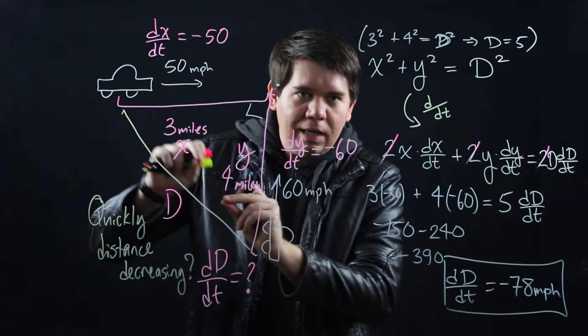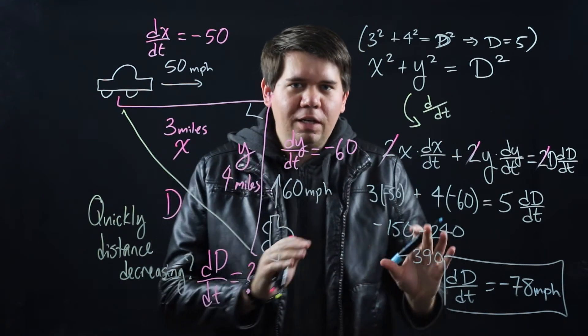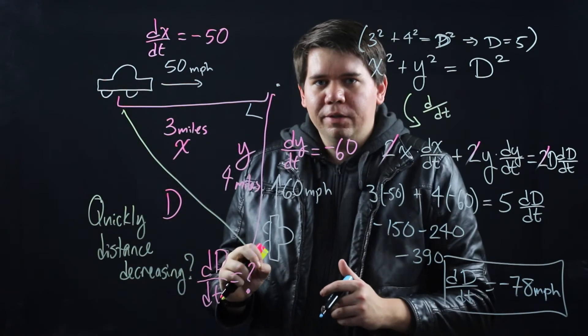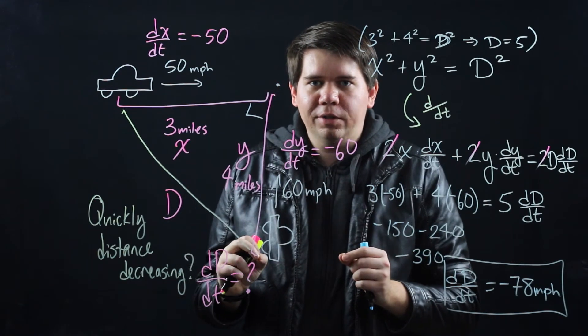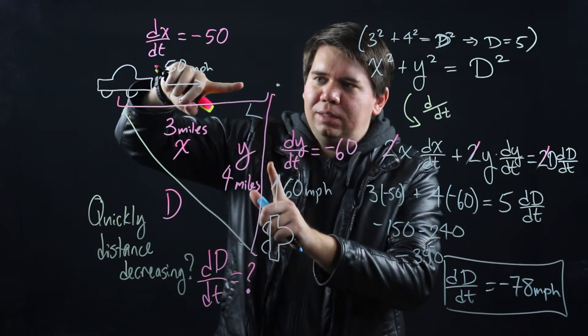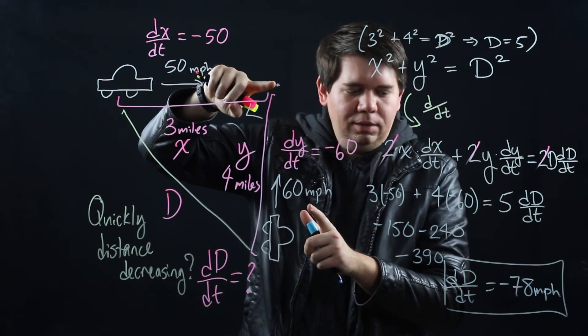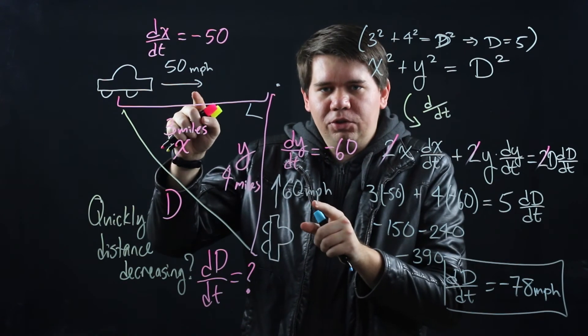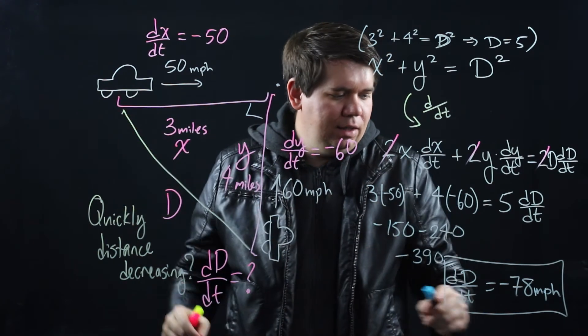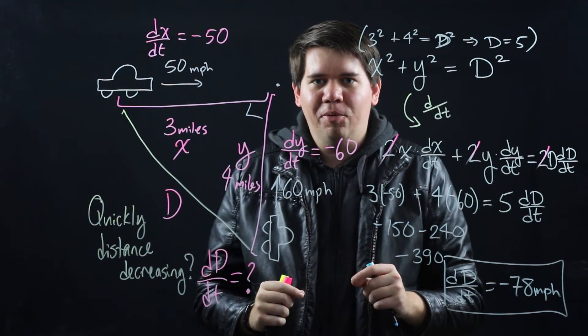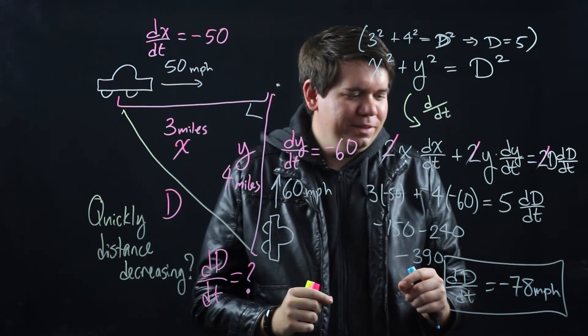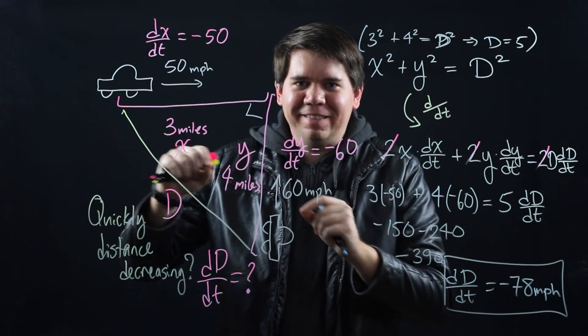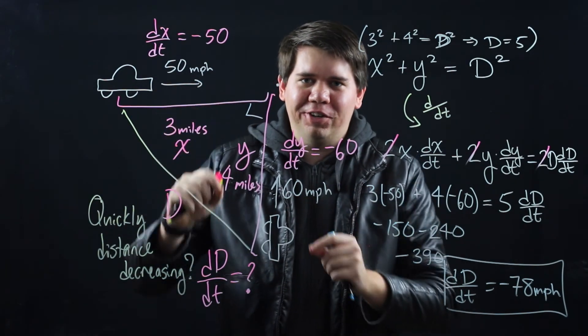So we have then that the speed that the distance between you is decreasing is negative 78. Why the negative? Because it's d decreasing. Okay let's just take a moment to appreciate what we just showed. You're driving at 50 miles per hour. Your friend's driving at 60 miles per hour. But since you're both headed towards the same common intersection point the distance between you is decreasing faster than either one of you is driving. The distance between you is decreasing at 78 miles per hour. I think there's something beautiful in that. The distance between you and your friend is decreasing faster than either one of you are going.